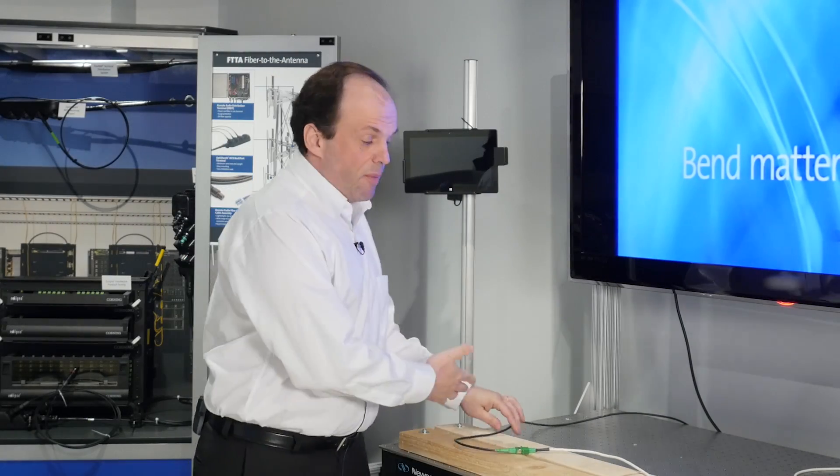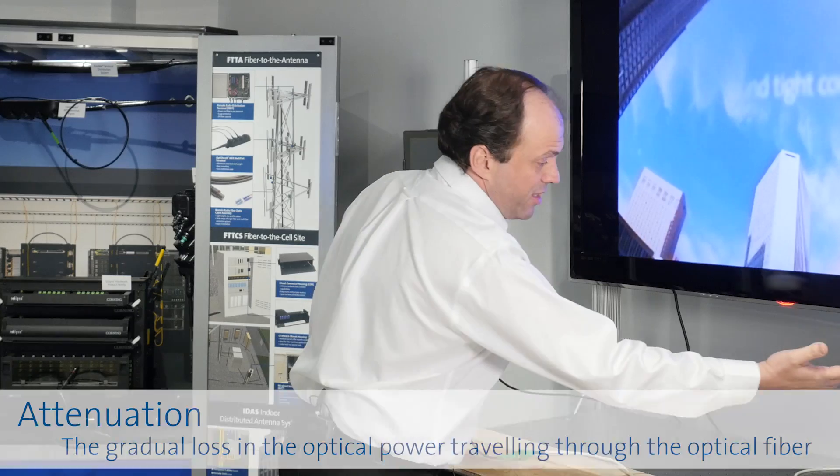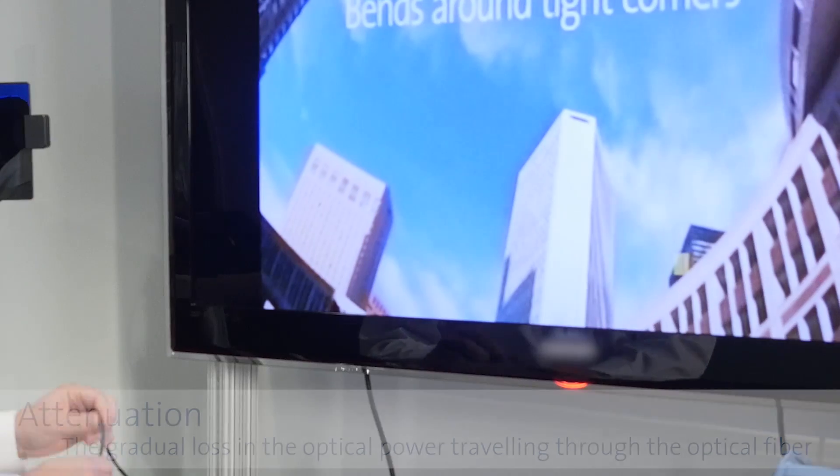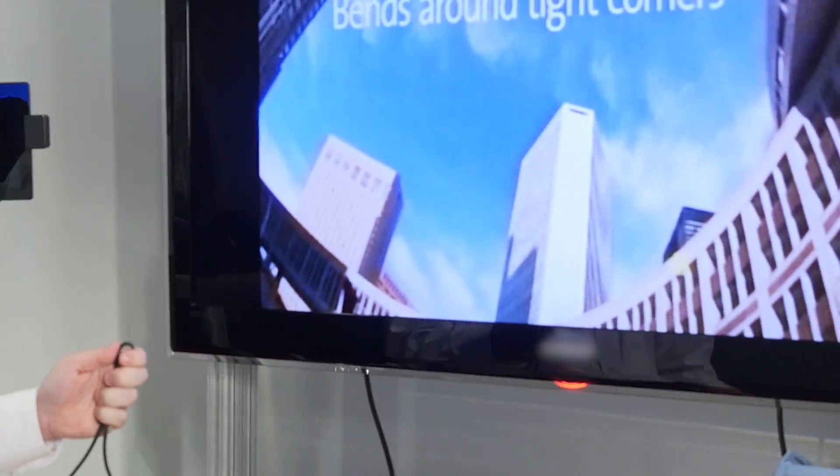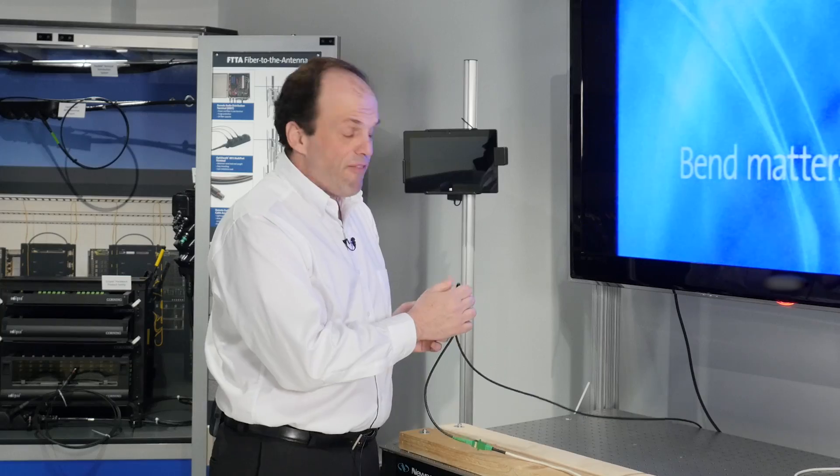Here what we have is an optical link with optical fiber transmitting this video, and actually we're showing the attenuation of this link. Now here I have a traditional optical fiber, and what happens is that when you bend the cable with optical fiber inside, you start losing your signal by increasing the attenuation on the link.